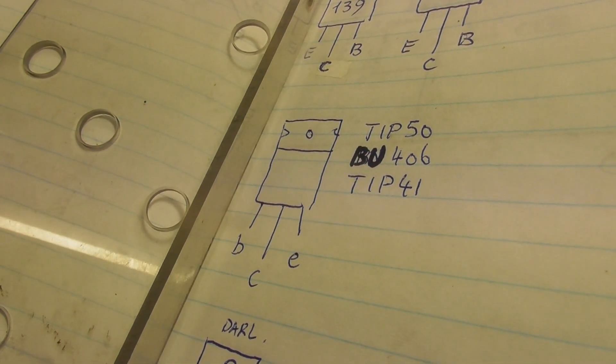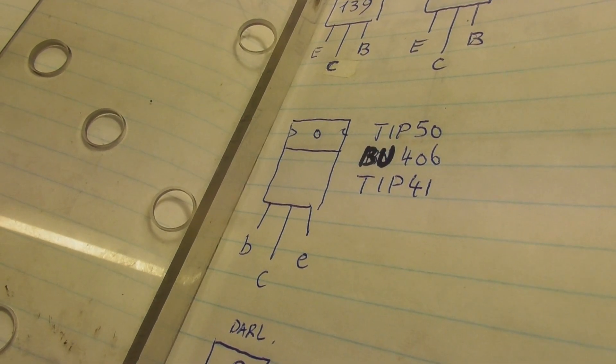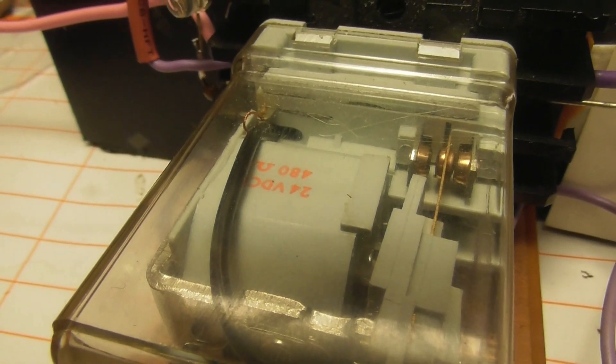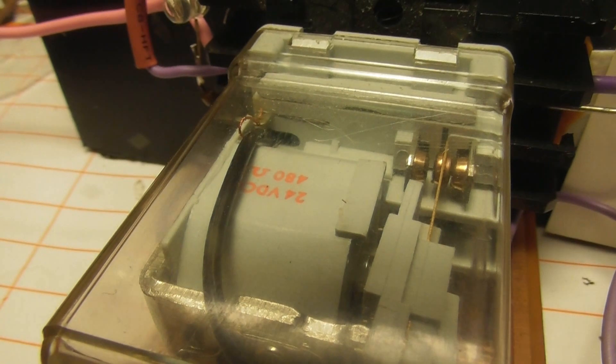Here are the TIP50 connections, base, collector, emitter. And this is just a standard SCADA 24V DC relay.